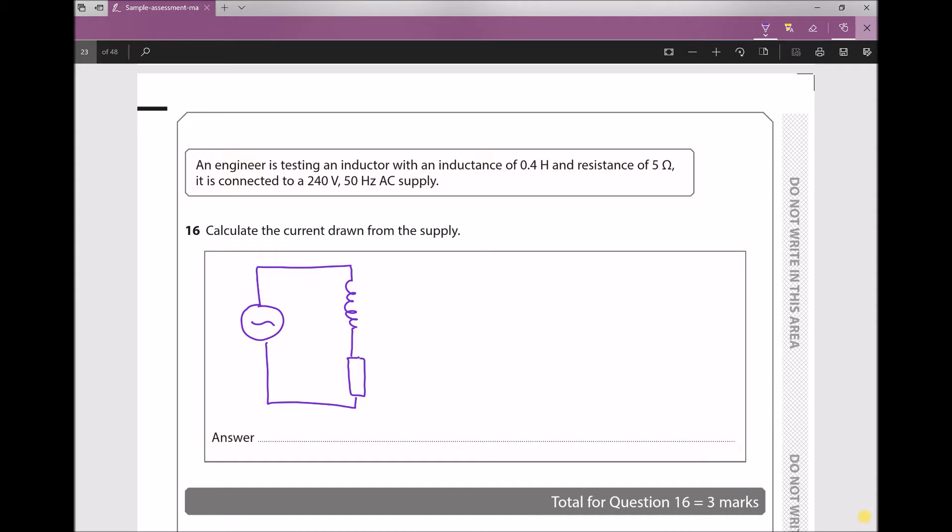I've already made a quick sketch of our situation here. We have an inductor with an inductance of 0.4 henrys, but it also has an internal resistance of 5 ohms. So we would treat this as an inductor in series with a resistor as shown. We're given data about our supply: it's an AC supply, 240 volts and 50 hertz.